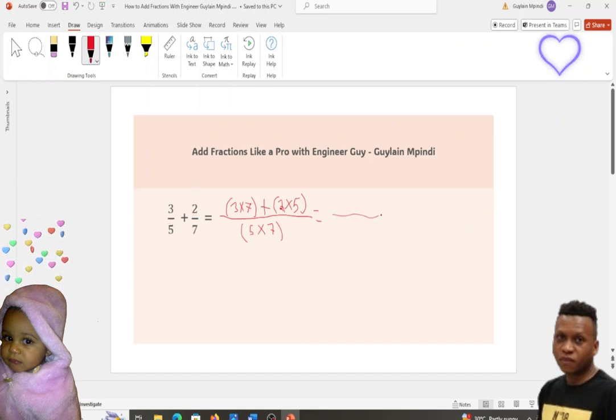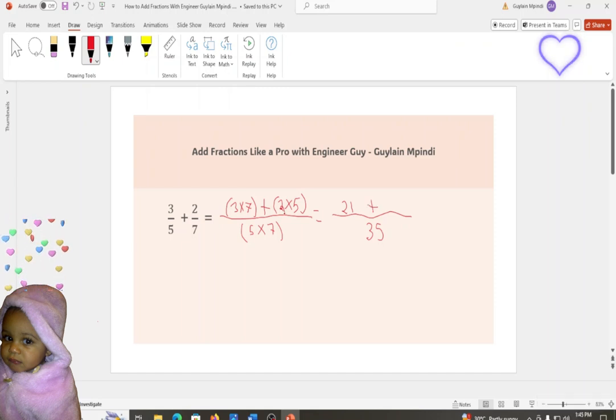So, 5 times 7 equal to 35. 3 times 7 equal to 21, right here. Plus, 2 times 5 equal to what? 10.